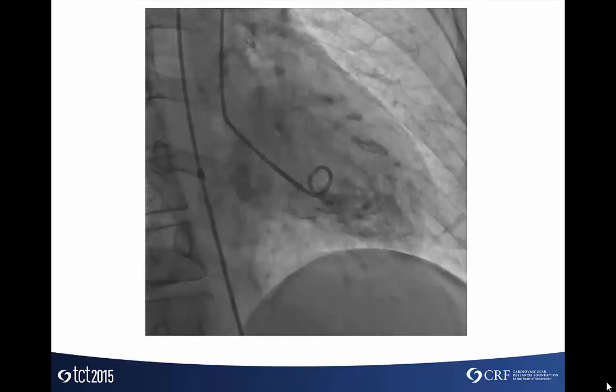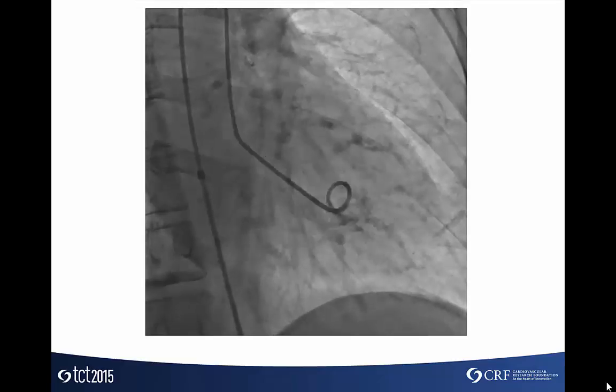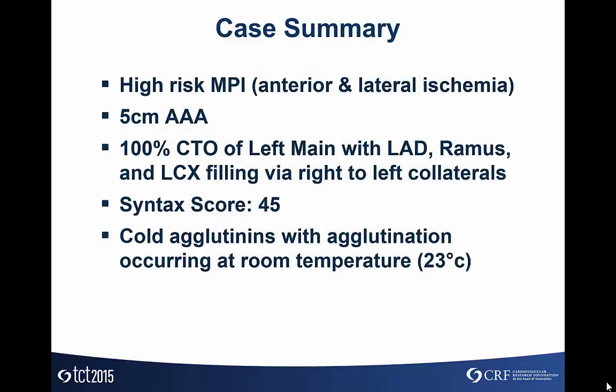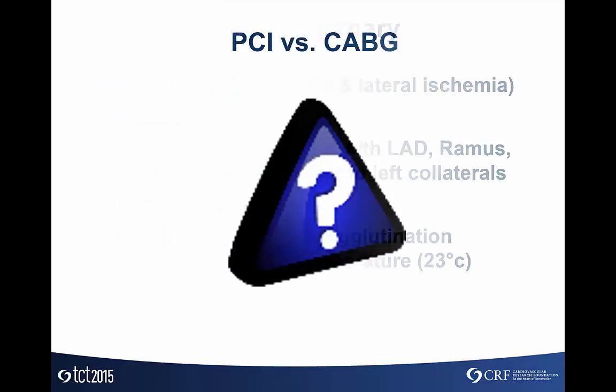The ventriculogram was acceptable, maybe a little bit of anterior hypokinesis. The case summary: very high-risk MPI, a 5-centimeter abdominal aortic aneurysm, 100% CTO of the left main, with LAD, ramus, and left circumflex filling via right-to-left collaterals, a SYNTAX score of 45, and cold agglutinins with agglutination occurring at room temperature at 23 degrees.